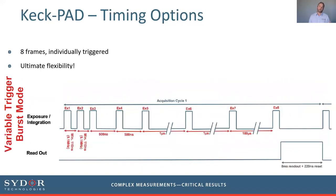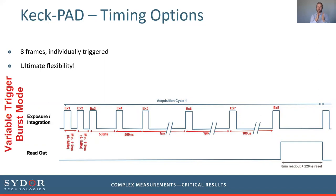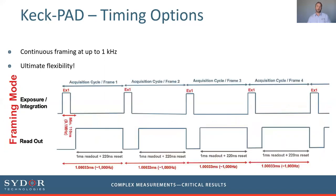Another application is to use those eight frames but spread out their timing to elongate the total image acquisition time. For something like catalysis, where very fast things happen at the start of a reaction, you could burst the first two or three frames very quickly, and then let the interframe time between subsequent exposures decay in a logarithmic fashion through to the eighth exposure before reading out again.